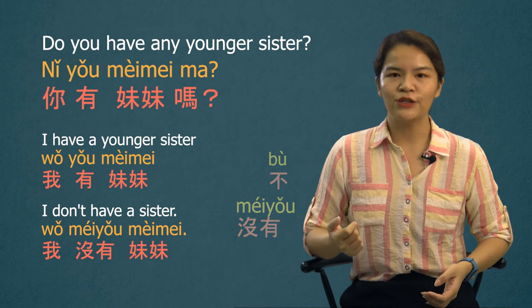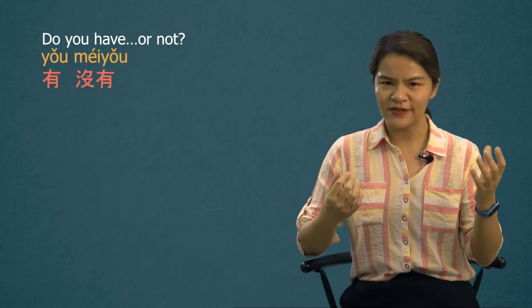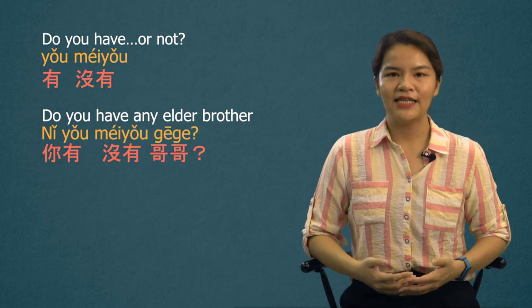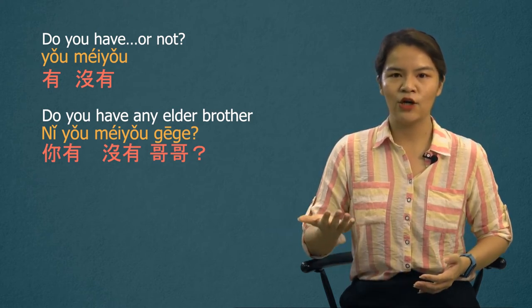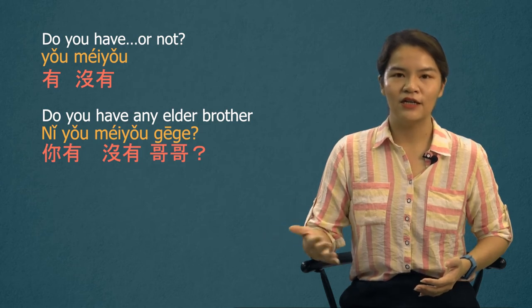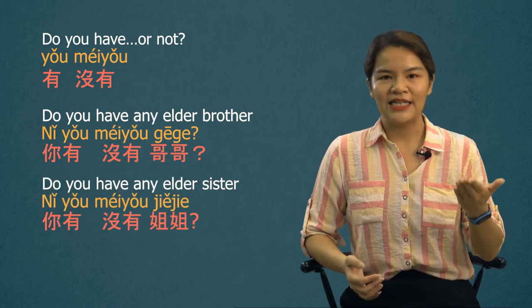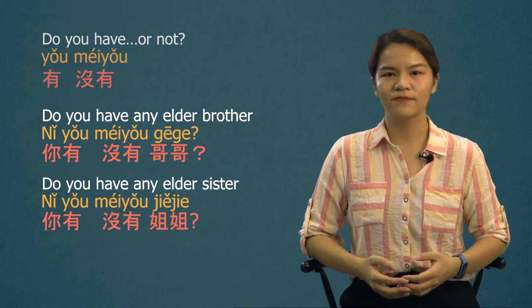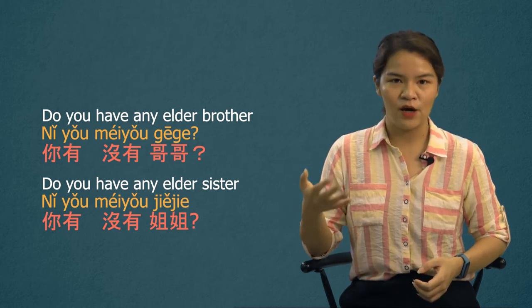We also learned to use affirmative-negative together to make a question. In this situation we say 有没有 — 'do you have something or not?' For example: 你有没有哥哥? — Do you have any elder brother? Or 你有没有姐姐? — Do you have any elder sister?